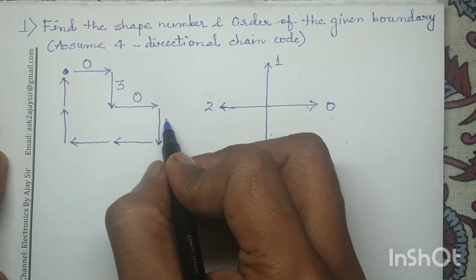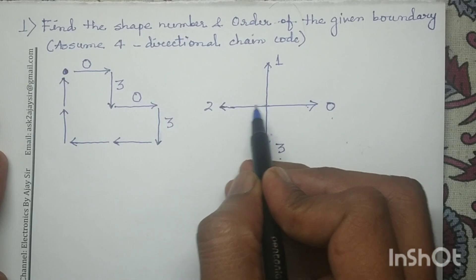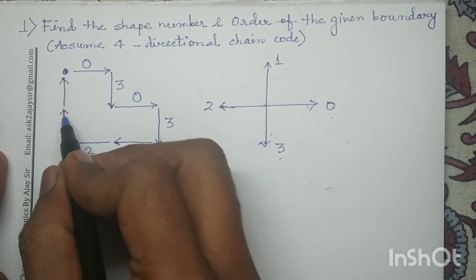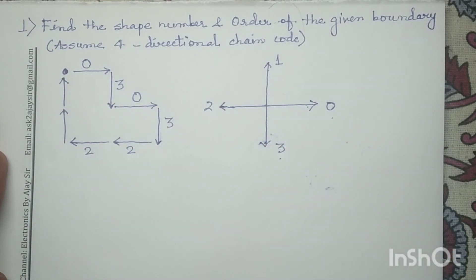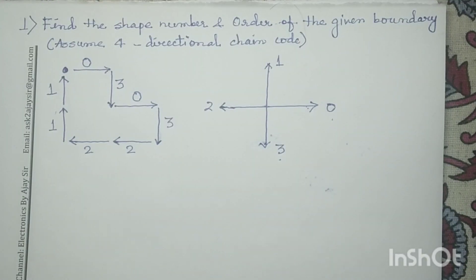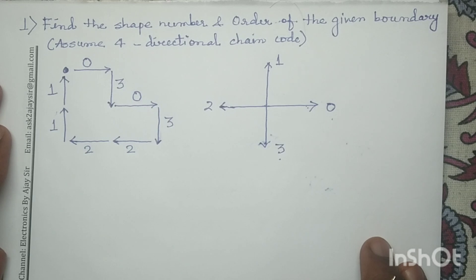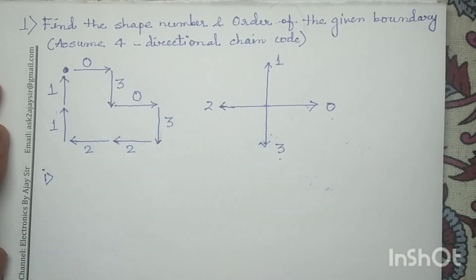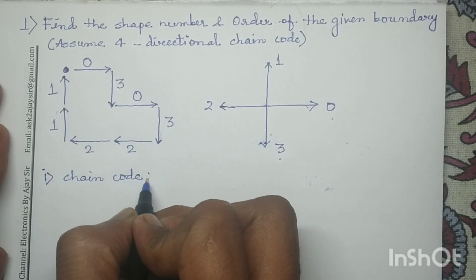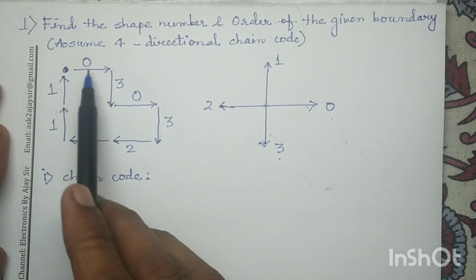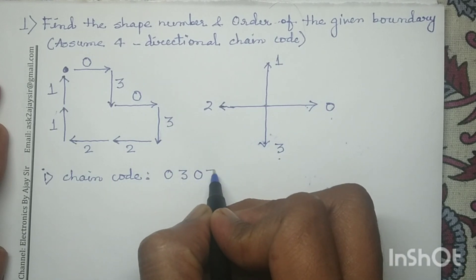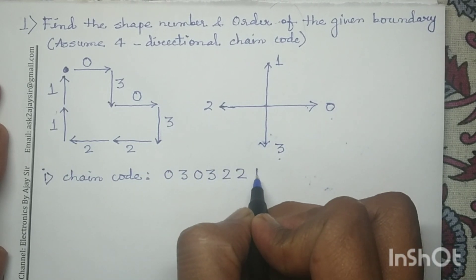Similarly, forward is code 0, downward is 3, reverse direction is code 2, and upward is code 1 — so I write 1 and 1. The chain code of this boundary becomes: 0 3 0 3 2 2 1 1.